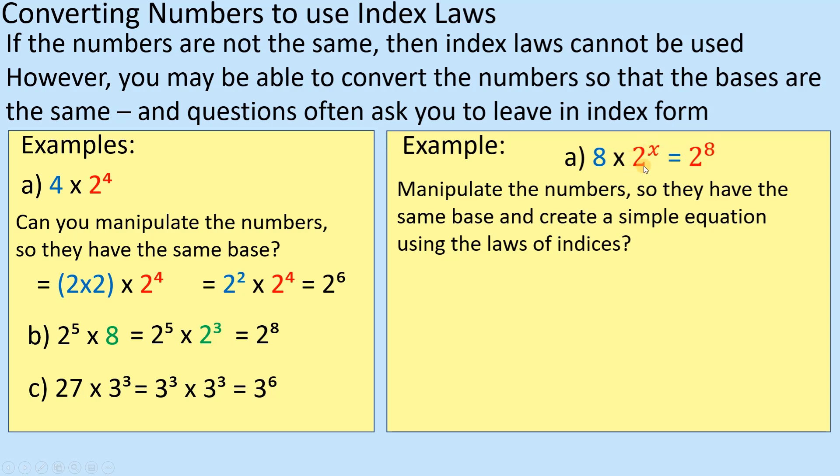So in terms of the indices rules, we added, didn't we? So I've got to change my 8, which you now know is 2 cubed. So you've got 2 cubed times 2 to the x equals 2 to the 8.